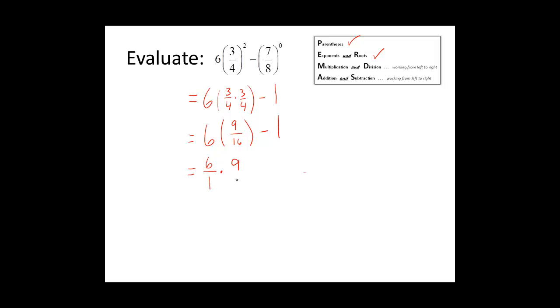We need to multiply that times 9 over 16. We see we have a common factor of 2 in this numerator and this denominator. So we will divide 6 by 2 and get 3, and 16 divided by 2 is equal to 8.